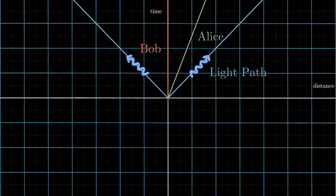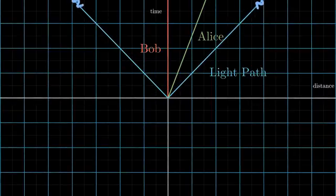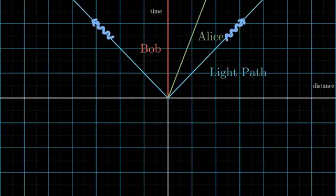This shows that light appears to have the same speed, no matter how fast you're moving. It's the foundation of special relativity, and it's the reason we use the Lorentz transformation.